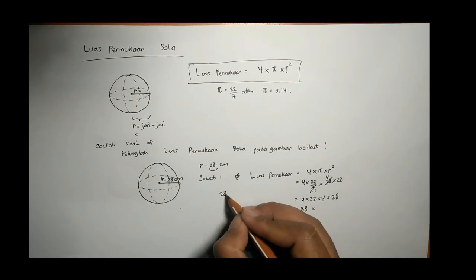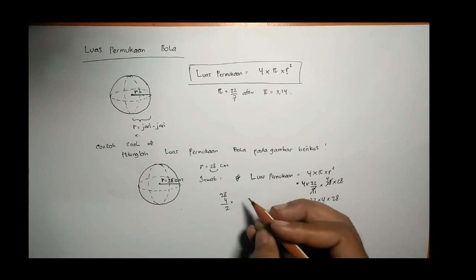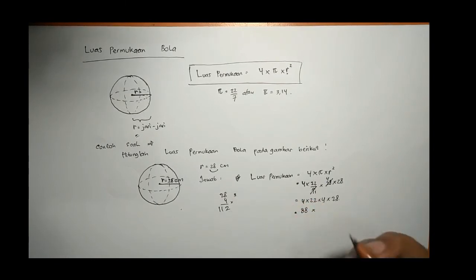Sedangkan 4 kali 28 kita hitung bersusun. Kali 4, kali 8, 32. 8 tambah 3, 11. 112.